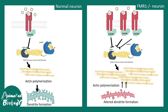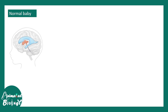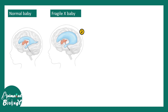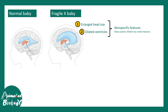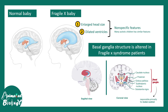Regarding the overall brain architecture, Fragile X babies show a slightly bigger brain size and dilated ventricles — enlarged head and dilated ventricles are common. However, this is not a differential feature because these changes are also seen in autism patients, who similarly have oversized brains and dilated ventricles. One structure specifically affected is the basal ganglia — specifically the caudate nucleus — which gets bigger in size, and this is an MRI finding from Fragile X syndrome patients.